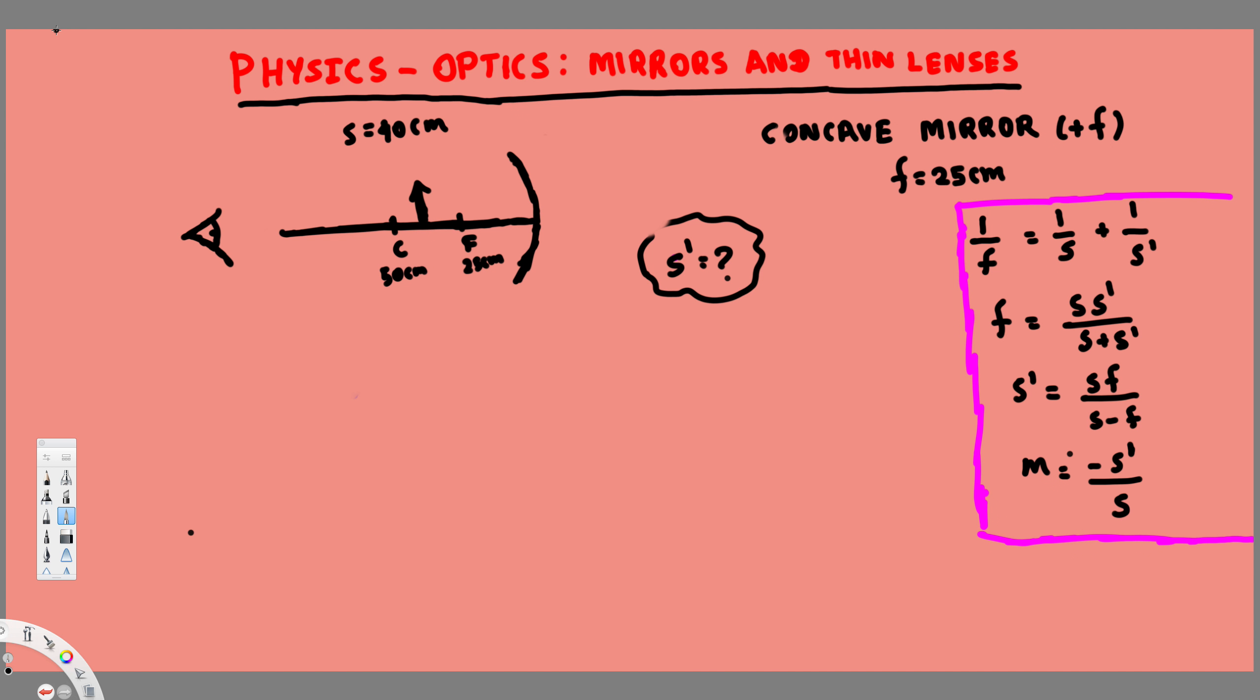Hey, what's going on guys, let's try this problem right here. Here we have a concave mirror and an object placed between the center of curvature and the focal point. The question is asking what's going to be the image distance. Let's see how we can find it.